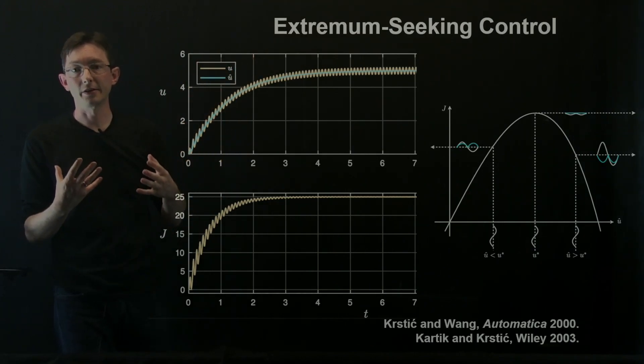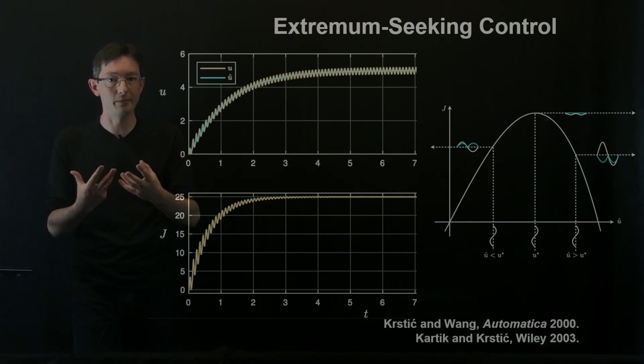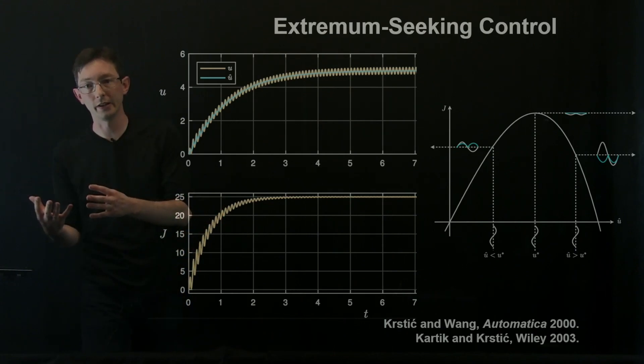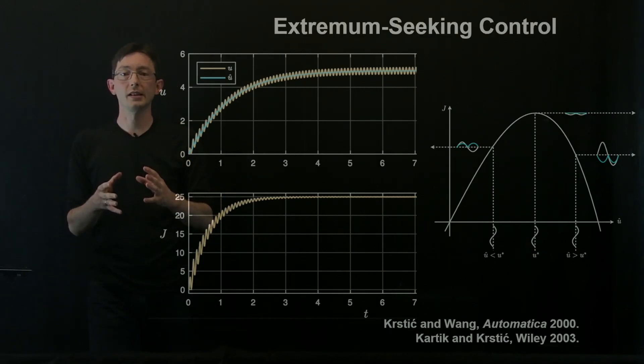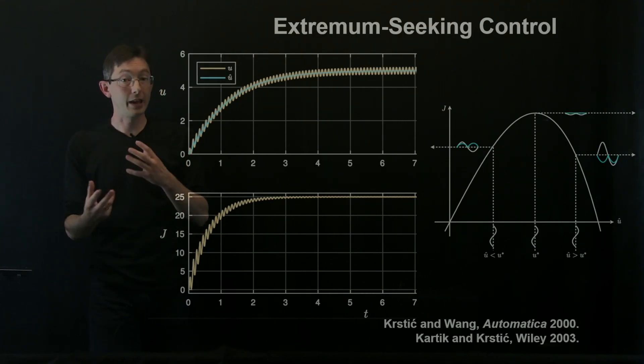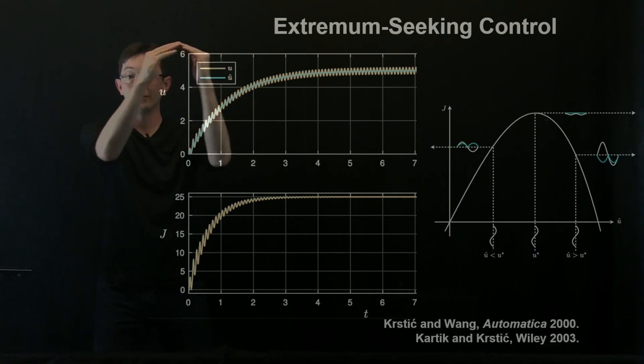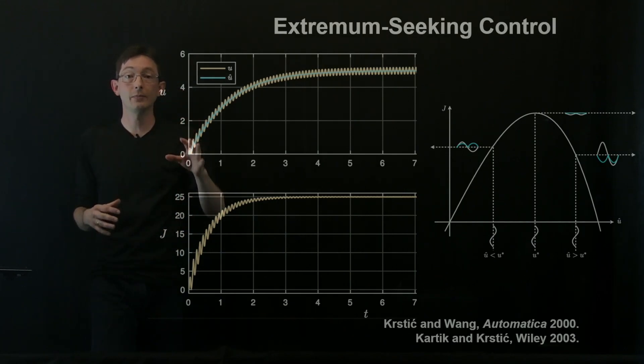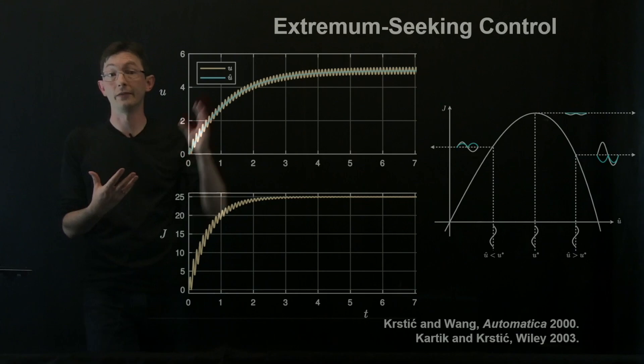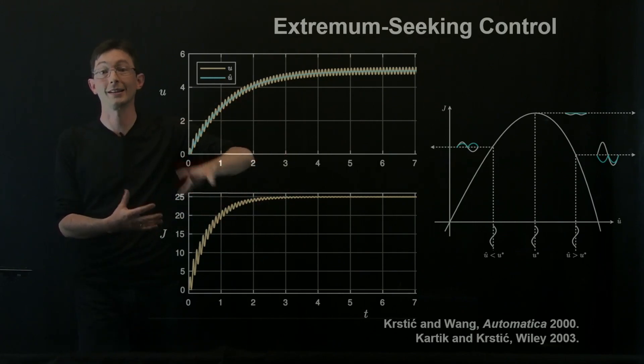Now, extremum seeking control is particularly interesting when your system has dynamics, when it's not just a static quadratic cost function, but there's some dynamical system that gives rise to the objective, like a fluid or some power electronics or something like that, where there's actually dynamics. And what's also interesting is when there are disturbances or parameters to your system that are changing over time that you can't measure. So what I'm going to tell you about now, I'm just going to go through a few examples of how myself and my collaborators have used extremum seeking control in the past to control actual real-world systems.